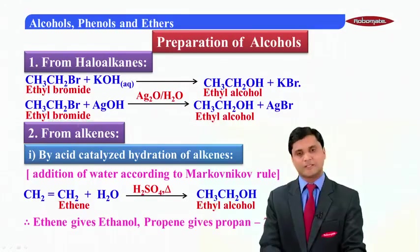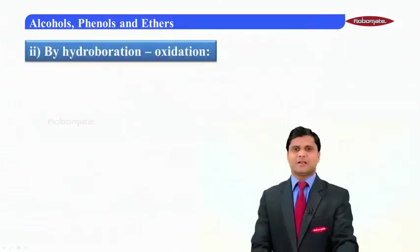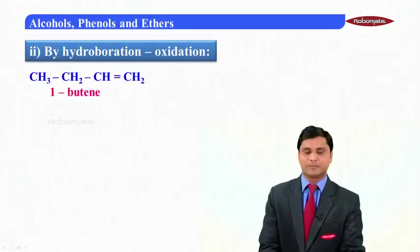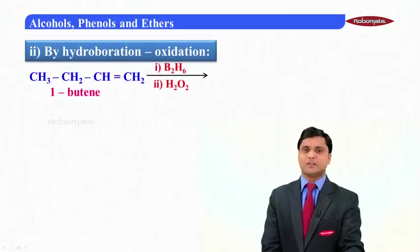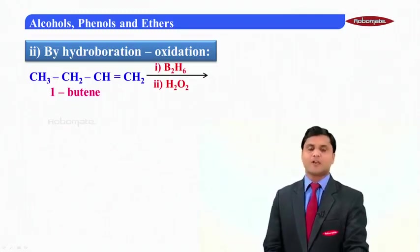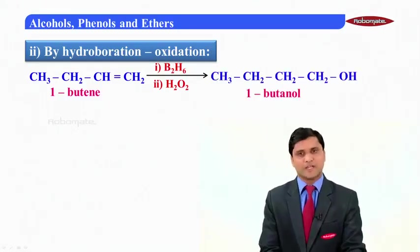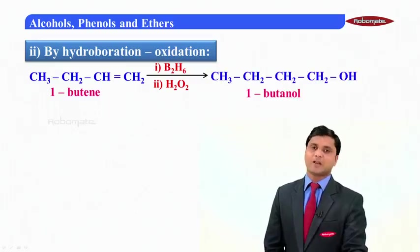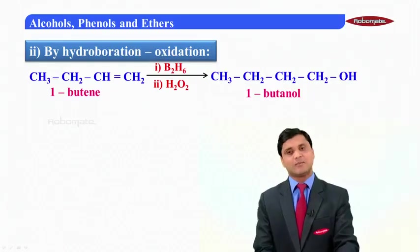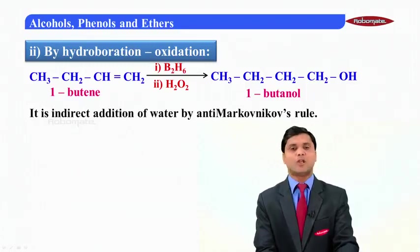Ethylene gives ethanol, and propene gives propan-2-ol. The next method is hydroboration-oxidation. Consider 1-butene reacting with diborane (B₂H₆) in the presence of hydrogen peroxide, which is the oxidizing agent — we get 1-butanol. Generally in this method we get terminal alcohols, where the OH group is attached to the terminal carbon atom. This is an indirect addition of water by anti-Markovnikov's rule.